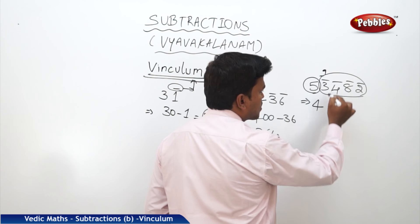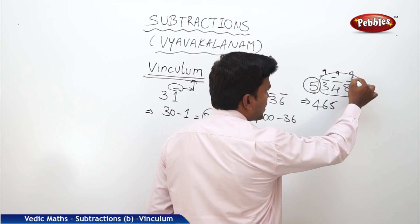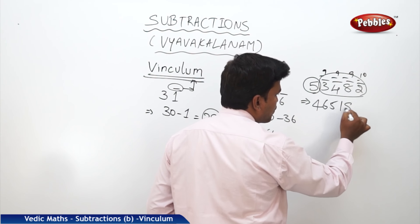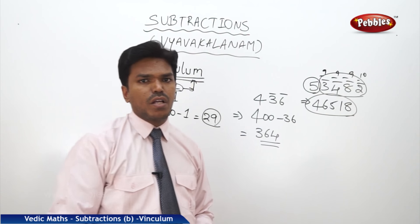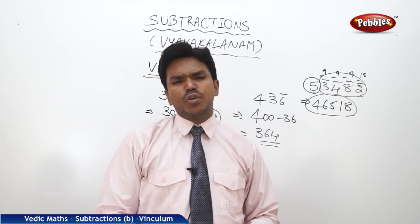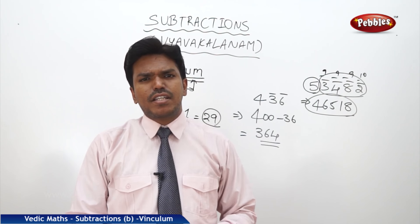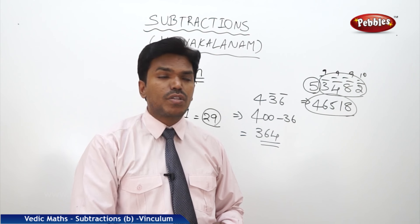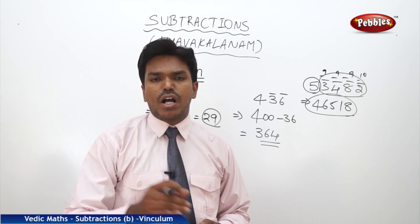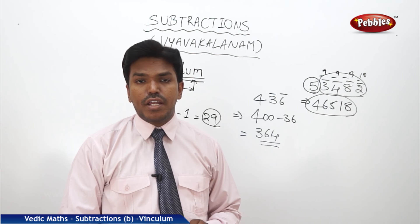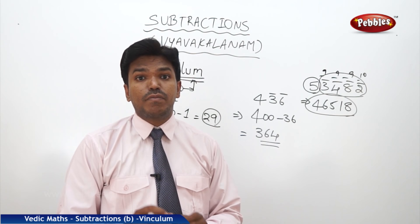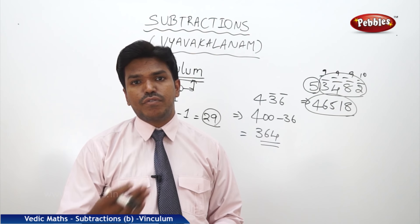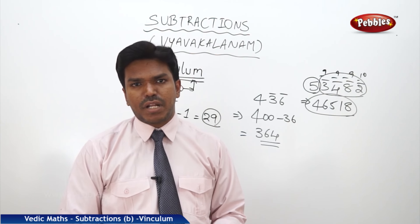Applying all from 9, last from 10: 9 minus 3 is 6, 9 minus 4 is 5, 9 minus 8 is 1, and last from 10: 10 minus 2 is 8. So your answer is 4, 6, 5, 1, 8. These concepts are very important for the coming subtraction methods, so you should be thorough and perfect with vinculum as well as the all from 9, last from 10 sutra.